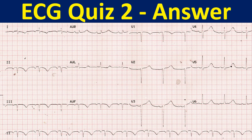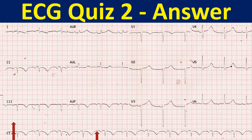At one look, the inferior leads make you think of an evolved inferior wall myocardial infarction because of QS complexes and T wave inversions. But the clue is the inverted P waves in the inferior leads. Uniform negativity of QRS complex and T waves along with P waves makes one suspect a misplaced left leg electrode.